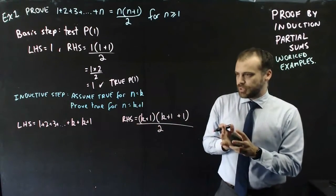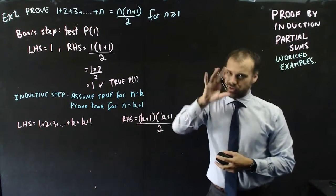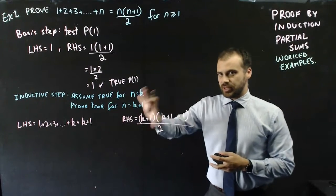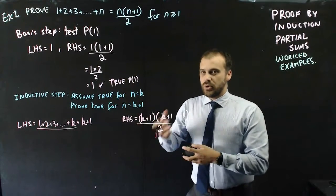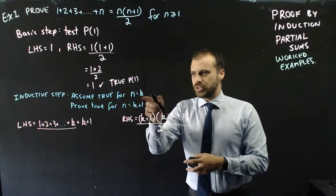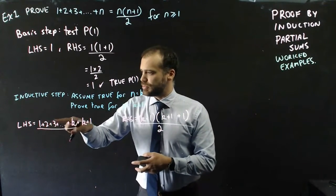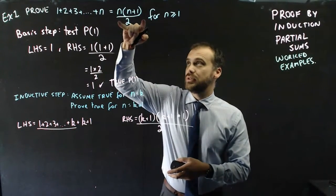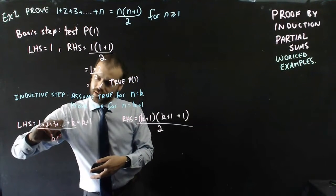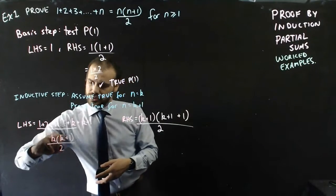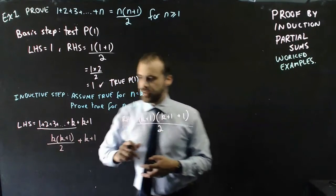We need to use algebraic manipulation to prove the left-hand side equals the right-hand side. The key trick is that within the left-hand side, there's a portion — 1 plus 2 plus 3 plus dot dot dot plus k — that we can replace using our assumption. We assumed it's true for n equals k, so we can replace that portion with k(k+1) over 2, plus k+1.